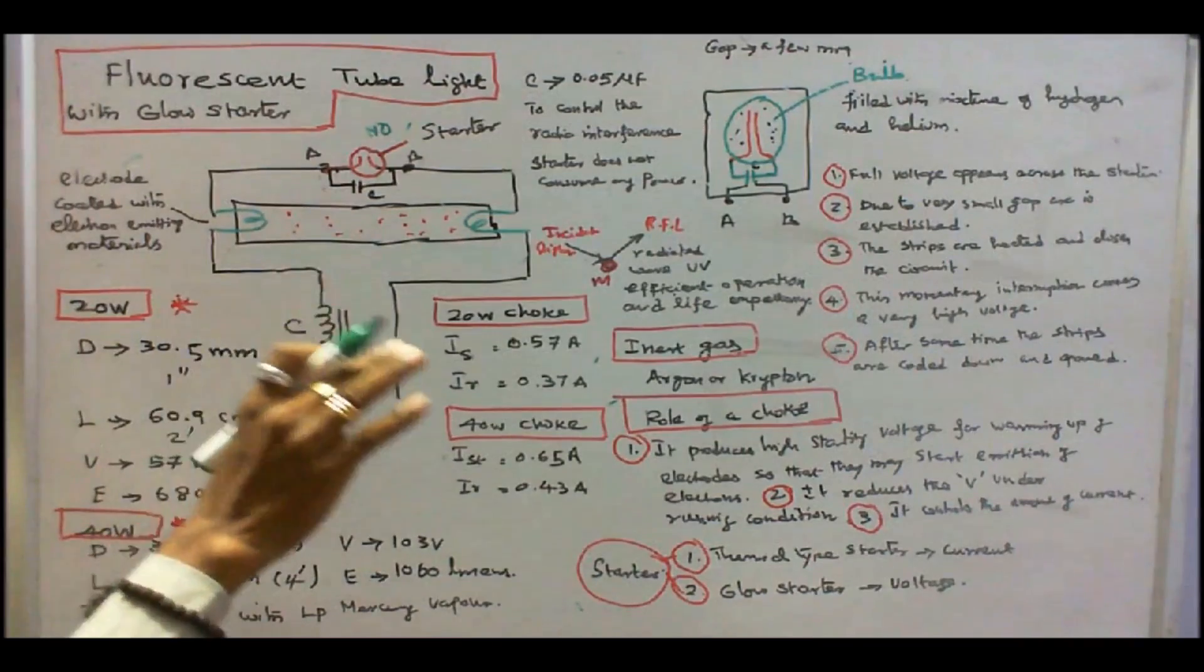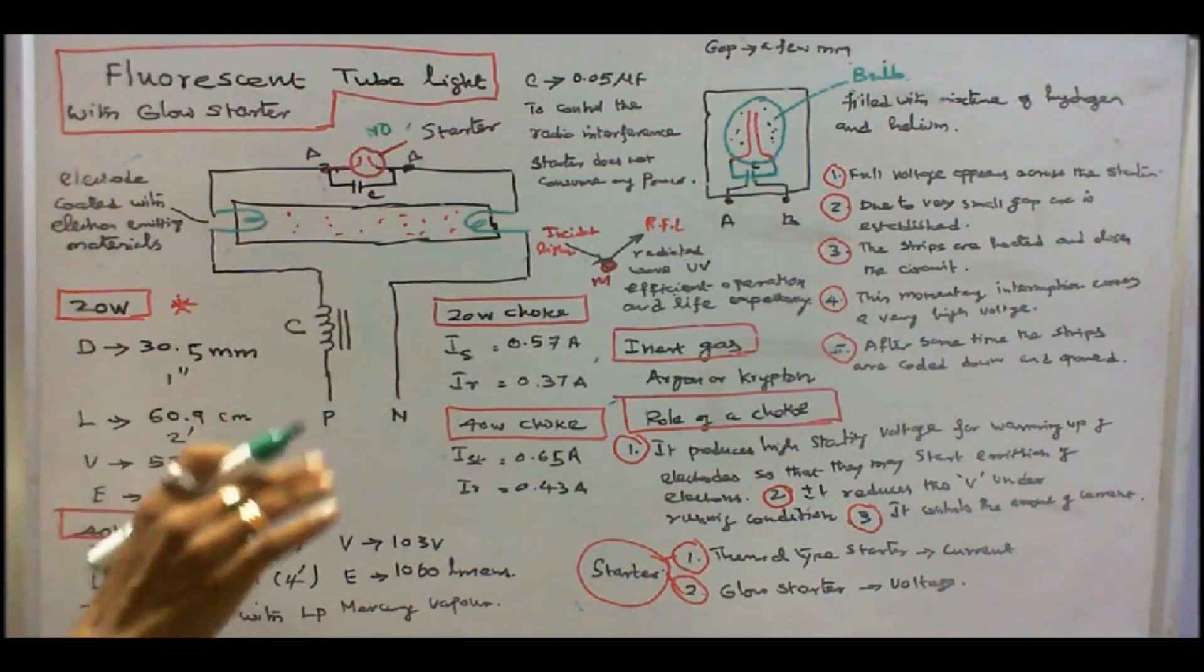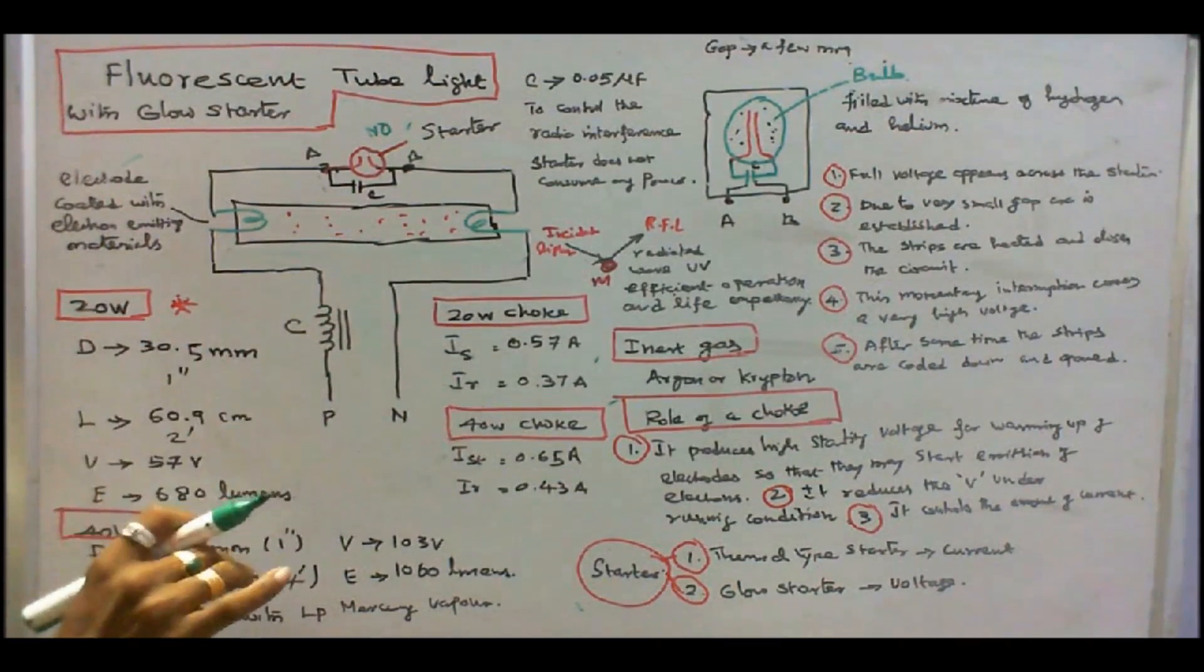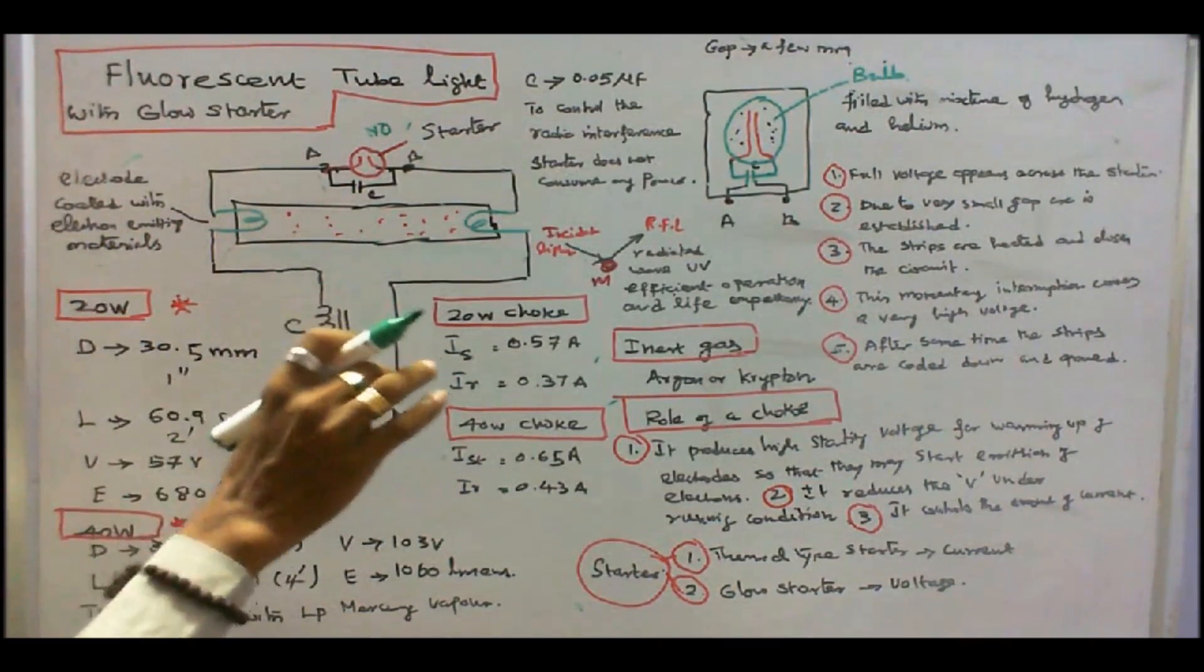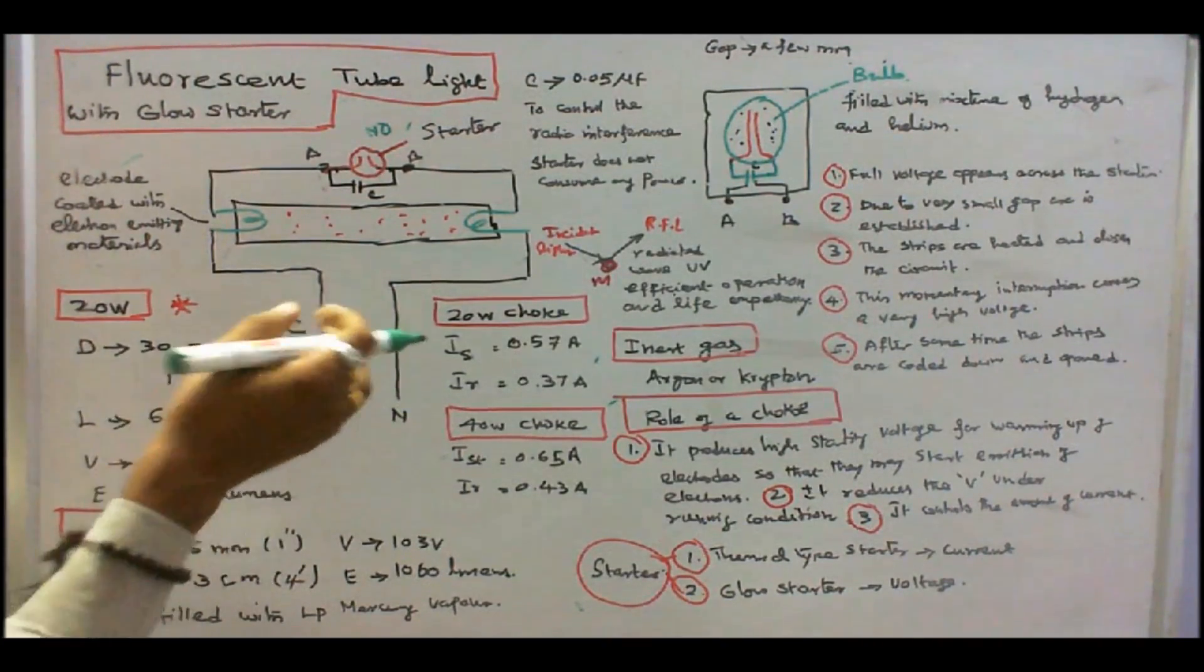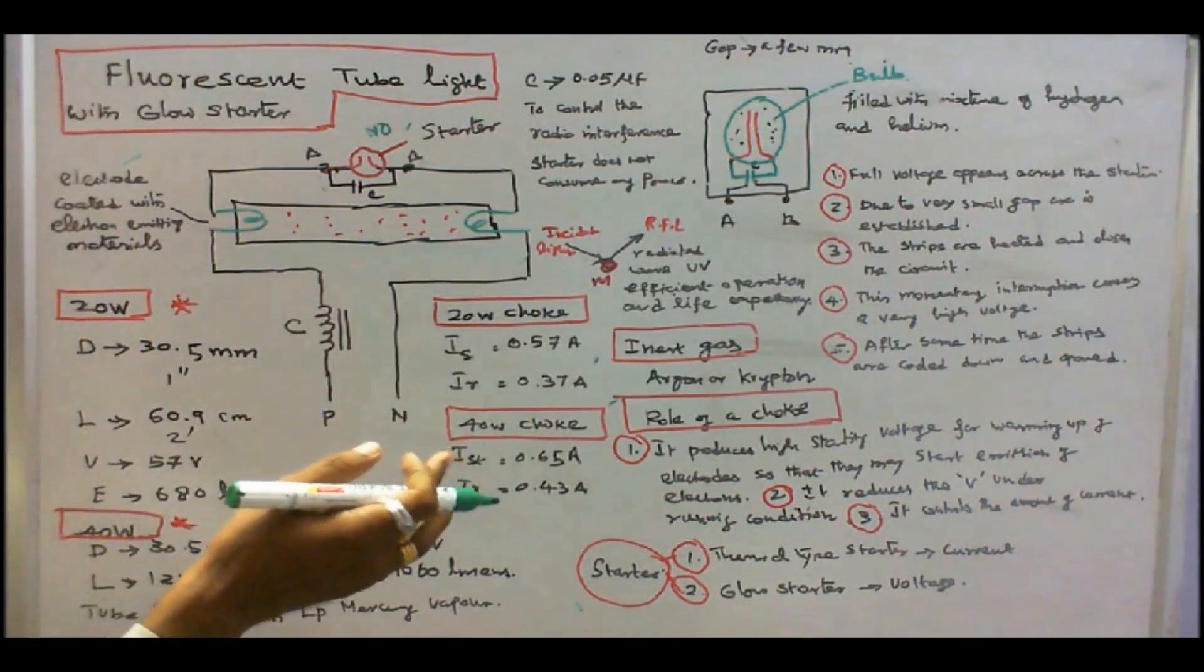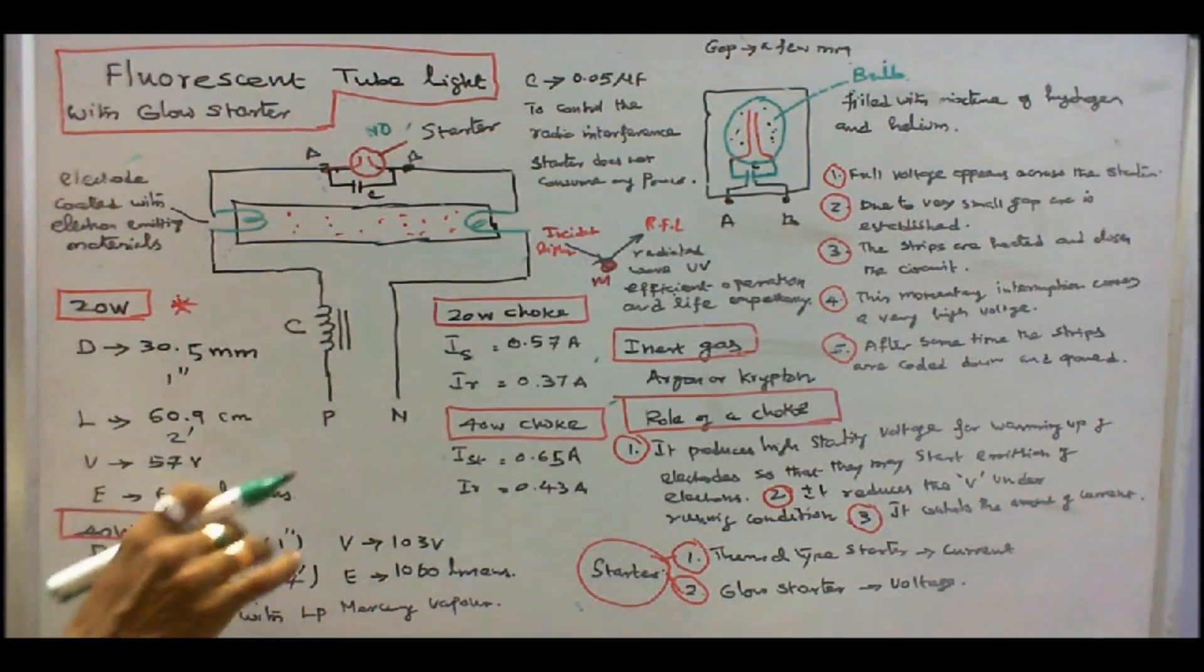So, E is equal to L into Di by DT. When DT is equal to 0, E tends to infinity. Practically, DT is not equal to 0. Therefore, any interruption in the inductive circuit, it develops a high voltage. That is the principle behind it. Already explained what is the difference between a choke and a reactor in the interview steel. Please refer.